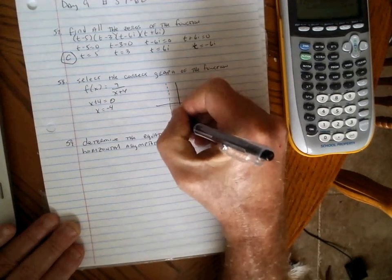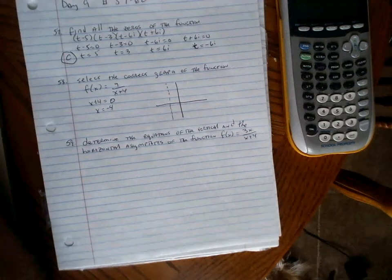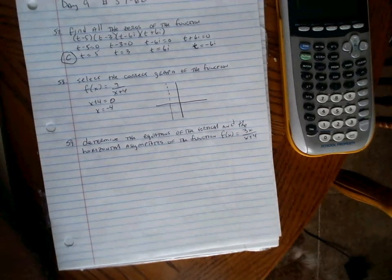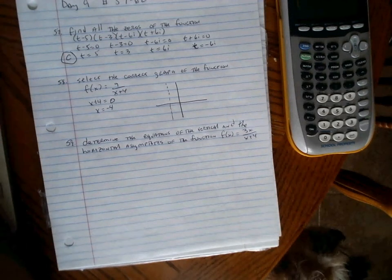We set the denominator equal to zero and find when x equals negative 4 there's a vertical asymptote. We can see there are only two choices with x equals negative 4 as a vertical asymptote: answers C and D.